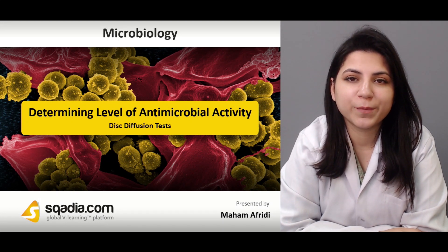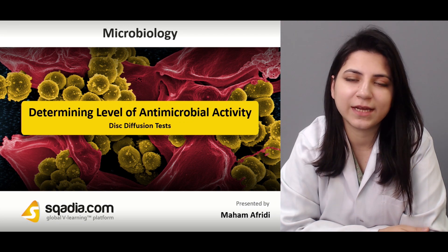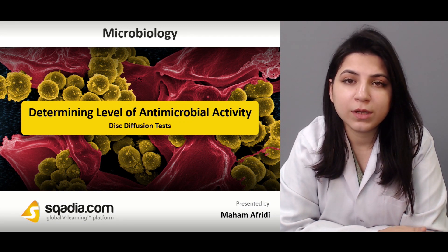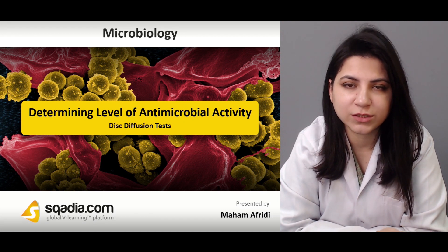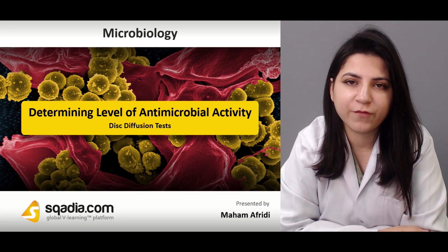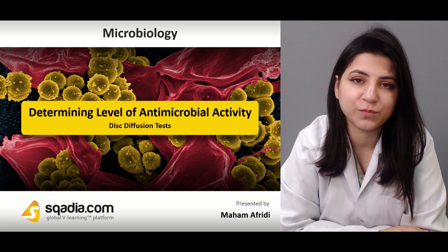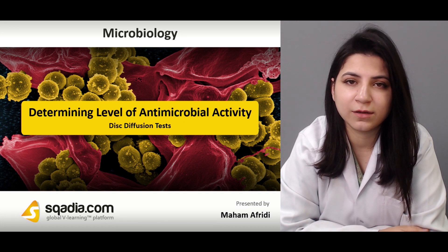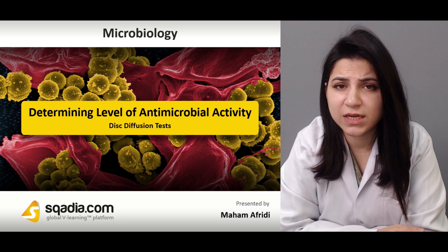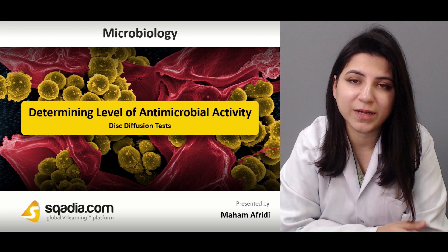To determine the level of antimicrobial activity, we need a range of tests that can be applied on a number of pathogens as well as on a number of antimicrobial agents. One of those tests is the disk diffusion test. This is a commonly used test to check the activity of antibiotics against different types of bacteria. It is considered a standard test and you can check the activity of a number of antibiotic agents against a particular pathogen side by side.